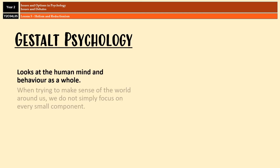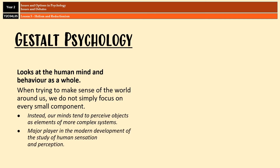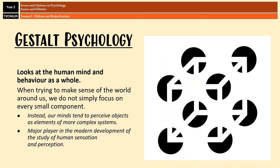There are quite a lot of examples of Holism in psychology, one of which is Gestalt psychology. Gestalt psychology suggests that when we try to make sense of the world around us, we don't just focus on all the small details, but rather we experience objects in our environment as elements of a more complex system. For example, the white cube you can see in the center of the image on screen isn't actually there, but our brain is perceiving all of the elements within the image and is helping us to view it as part of something bigger rather than just all of the individual component parts.